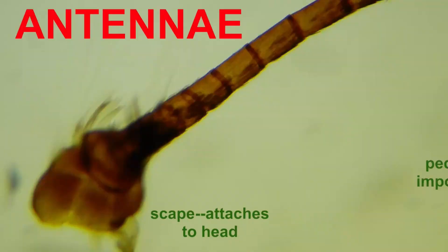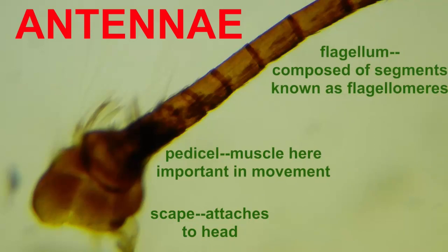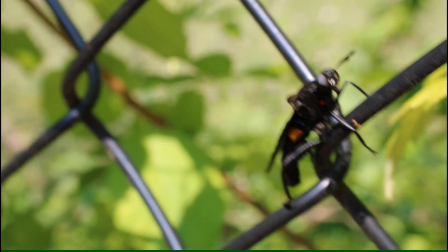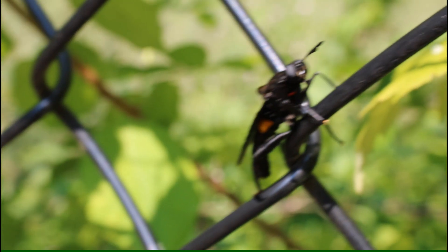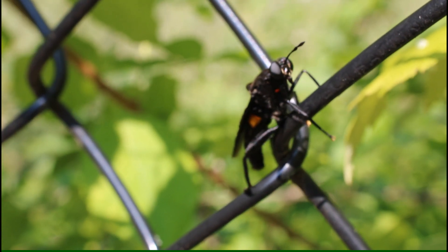Muscle here is important in the movement of the antennae, and then finally the remaining segments are referred to as a flagellum, which are composed of individual segments known as flagellomeres.